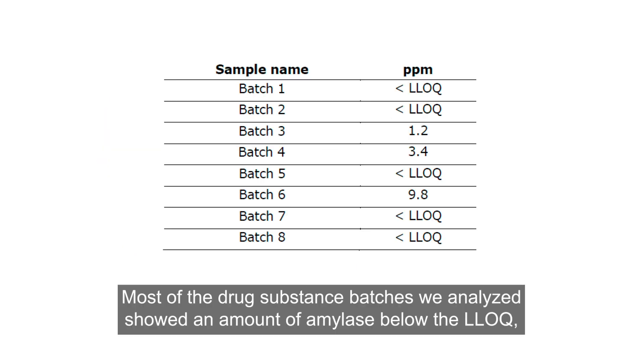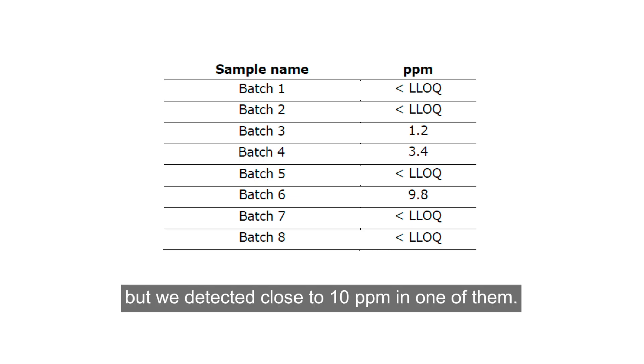Most of the drug substance batches we analyzed showed an amount of amylase below the LLOQ, but we also detected close to 10 ppm in one of them.